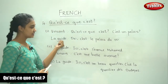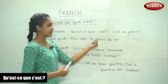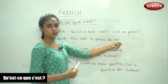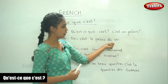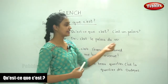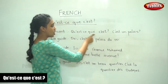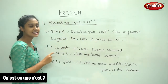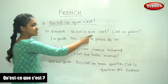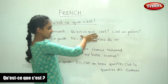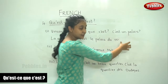La guide says 'Oui, c'est le palais du roi' — It is the palace of the king. So the question here is 'Qu'est-ce que c'est?' — What is this? And the answer is 'C'est un palais' — It is a palace.